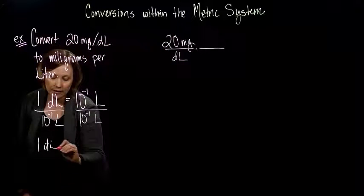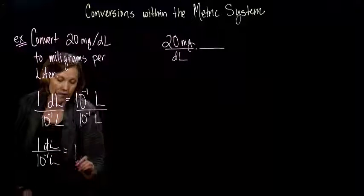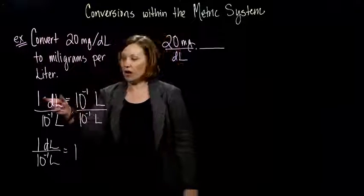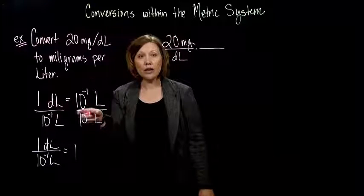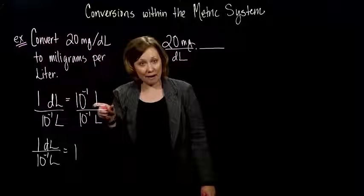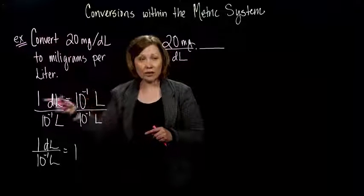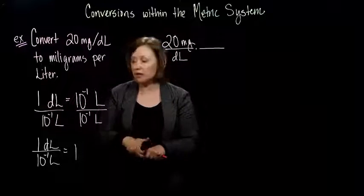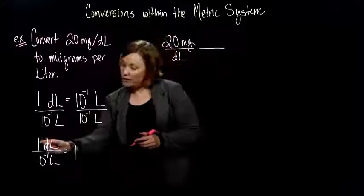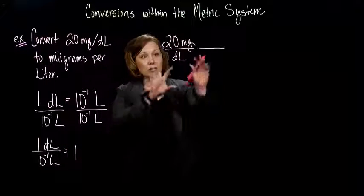Everything cancels out on the right side. And I know 1 deciliter to 10 to the minus 1 liters is the same as 1. Or you could think of it as a ratio. You got 1 deciliter per 10 to the minus 1 liters. In a ratio, it doesn't matter which one you write on the top and the bottom. These guys are still going to be equivalent. What you have is still equivalent to 1. So, up to you how you want to think about it.